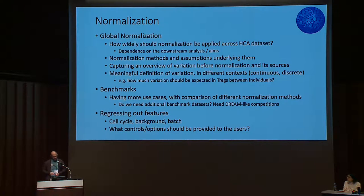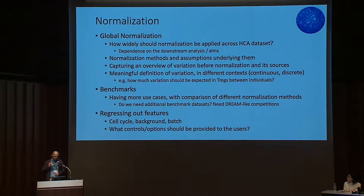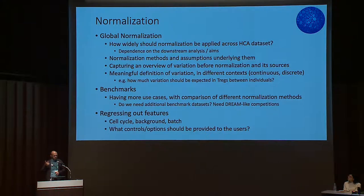There was also discussion about how much variation is meaningful — if we normalize everything to look very similar, are we getting rid of our signals? How much variation should be expected from the same cell type in different contexts, or between different cell types? For example, Tregs might vary a lot while epithelial cells not so much. There was a general desire to have more illustrations or evaluations of different normalization methods in different scenarios — integration, differential expression, single platform versus multiple platforms. A suggestion to hold DREAM-like competitions around some of these problems was also raised.